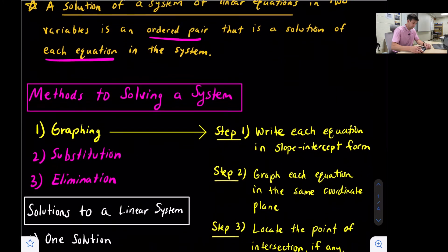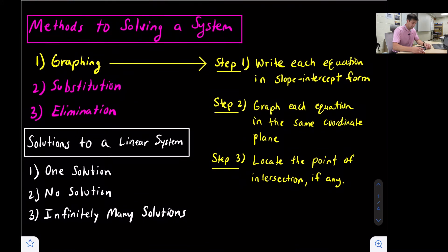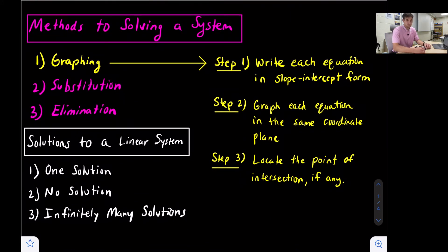When we talk about systems, there are three methods we could use to solve a system of linear equations, and there are also three types of solutions we could have. We're going to go over all three methods, but in this video we're going to focus on graphing. We can also solve a system by using substitution, and we can use what's called elimination.